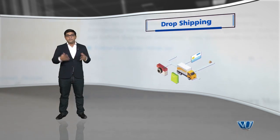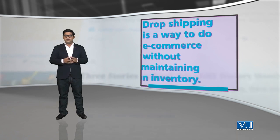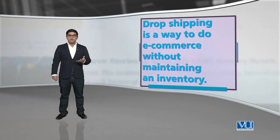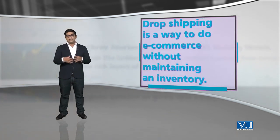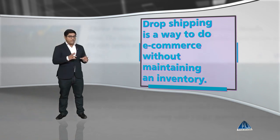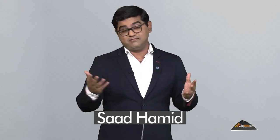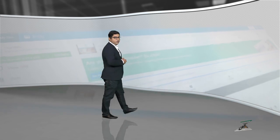You can do something called drop shipping. Drop shipping is a way to do e-commerce without maintaining any inventory. آپ کو کوئی کار خانہ رکھنے کی ضرورت نہیں، کوئی inventory رکھنے کی ضرورت نہیں۔ All you have to do is make a website and enable drop shipping using WooCommerce. The plug-in you will use for e-commerce on WordPress is called WooCommerce.